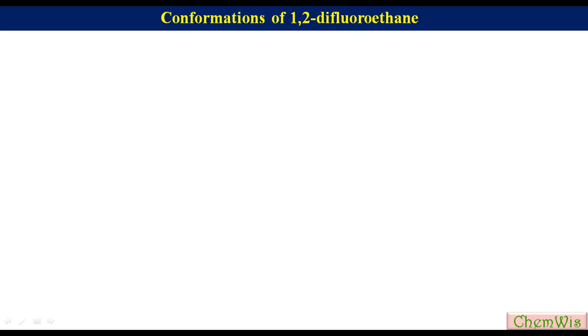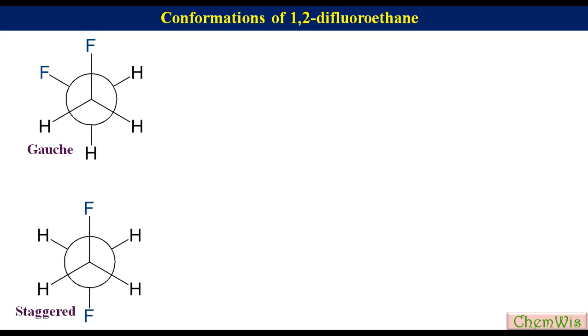Hello friends, welcome to the stereochemistry lecture again. In continuation to the last lecture on conformation of ethane, today we are going to discuss two stable conformations of 1,2-difluoroethane: these two stable conformations are gauche and staggered.